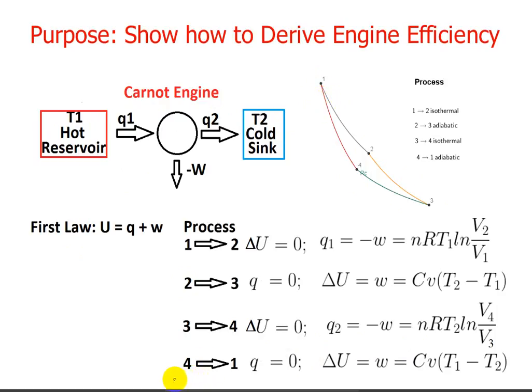The process from state 4 back to state 1 to close the loop is again adiabatic. Q is equal to zero. Delta U is equal to W is equal to CV times T final is T1 minus T2, which is T initial. And so this process 4 is exactly the opposite of process 2, and they will tend to cancel one another.